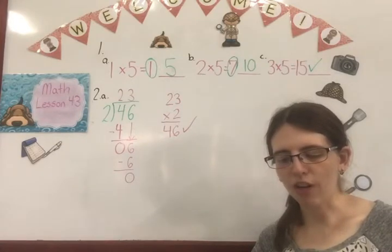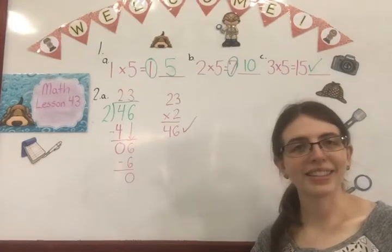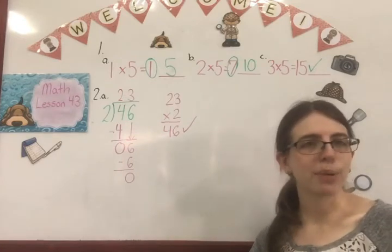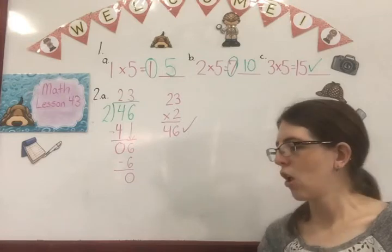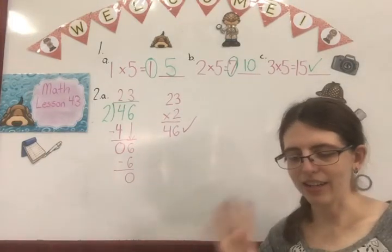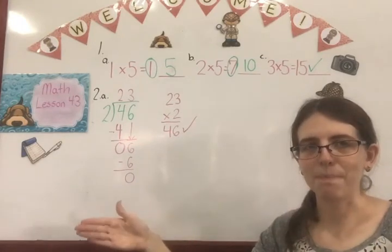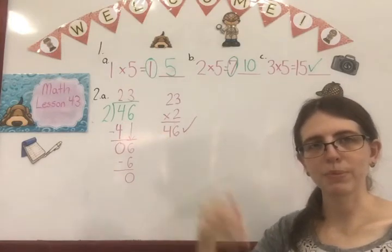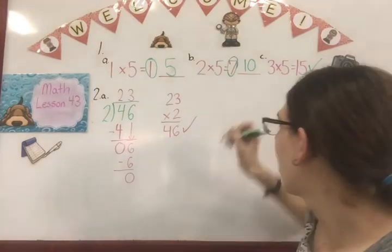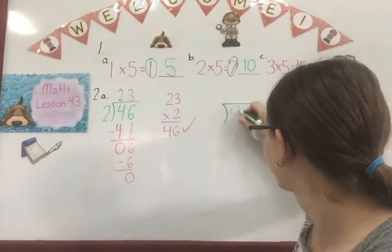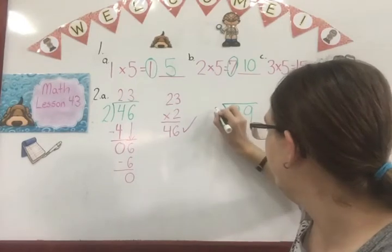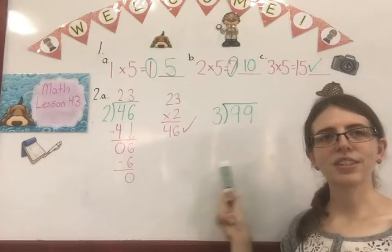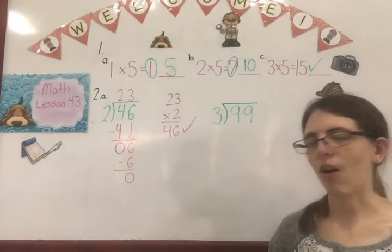Okay. Number 4 says solve the story problem. Caleb has 99 books. He wants to divide them evenly among three shelves. How many books will he put on each shelf? Okay. Let's check that out. So he has 99 books. He wants to divide them. So I know I'm going to divide. I'm going to divide them into three groups because he has three shelves. So I have 99 divided by three. And that's how you solve your story problem. So you'll put 99 divided by three in your workspace and solve the problem.